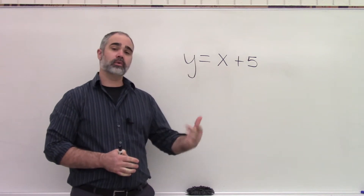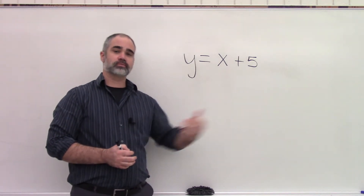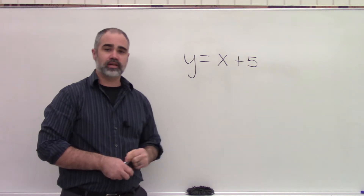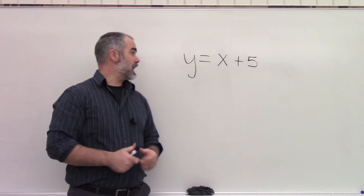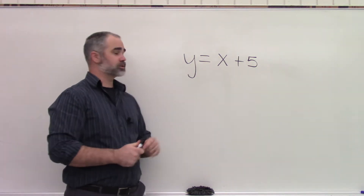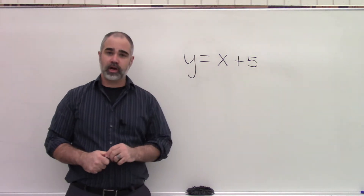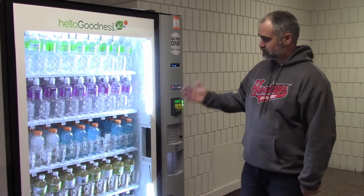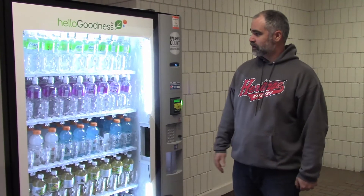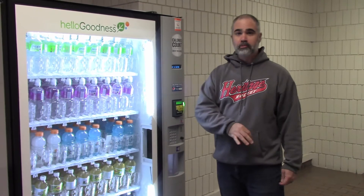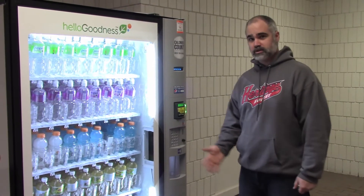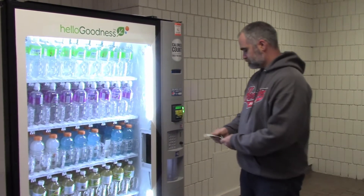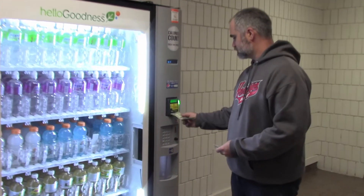I actually can't figure out what number Y is until I know what X is first. If you know what X is, then you know what Y is. We say that Y depends on X. Situations in math like this, we actually call functions. A function is like a vending machine — every function has an input and an output, and every vending machine does as well.